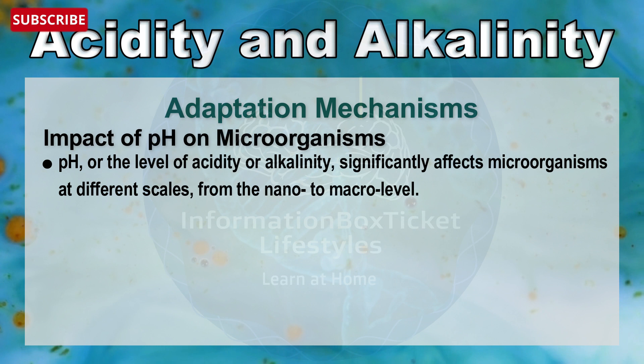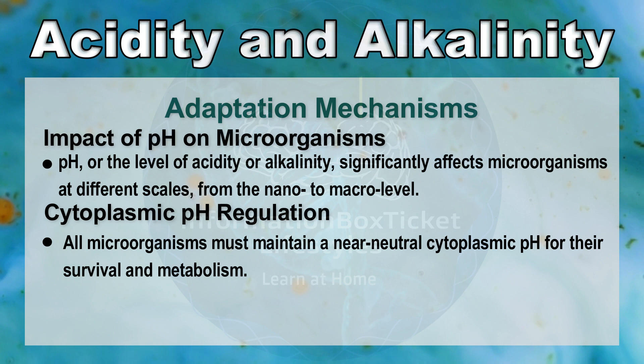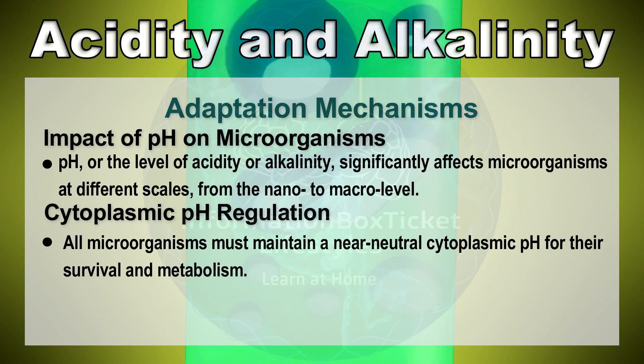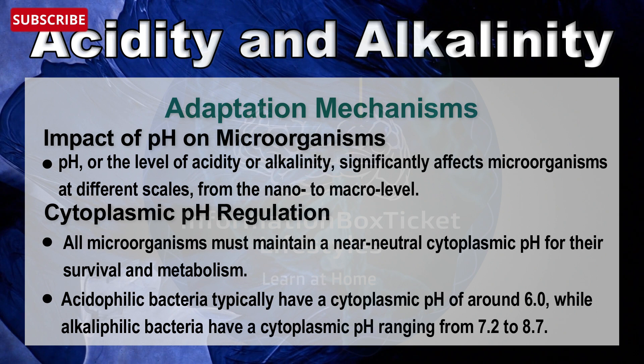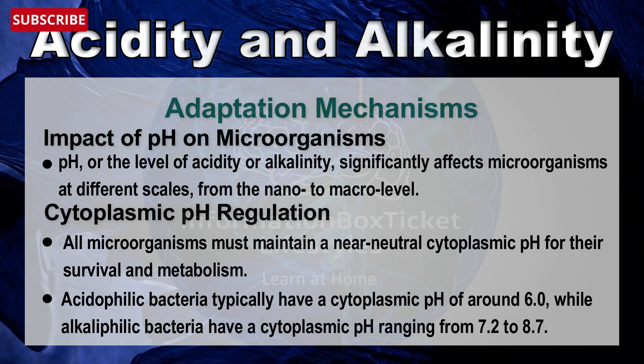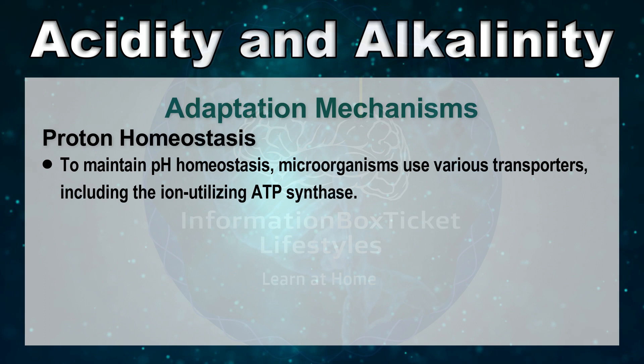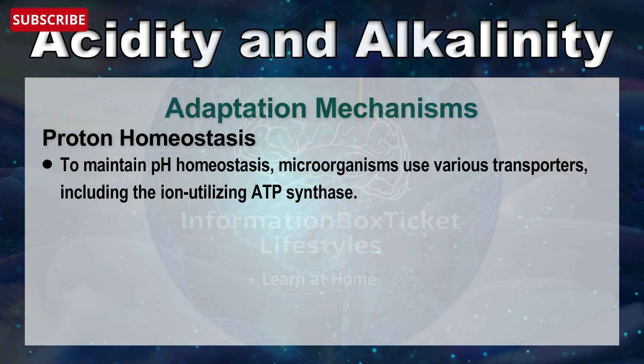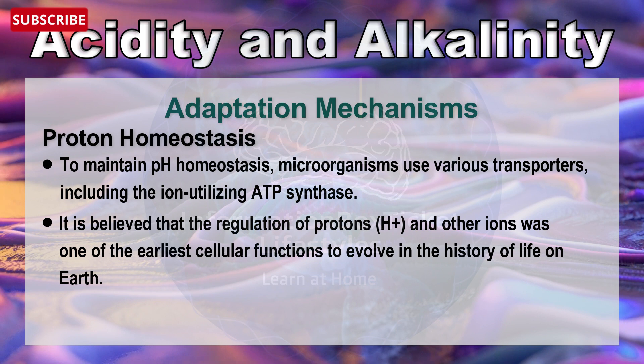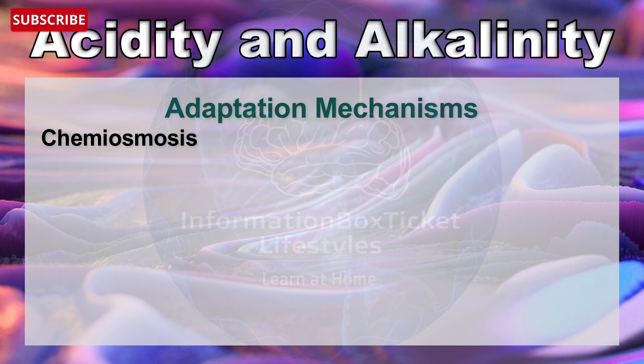All microorganisms must maintain a near-neutral cytoplasmic pH for their survival and metabolism. Acidophilic bacteria typically have a cytoplasmic pH of around 6.0, while alkaliphilic bacteria have a cytoplasmic pH ranging from 7.2 to 8.7. To maintain pH homeostasis, microorganisms use various transporters including ion-utilizing ATP synthase. It is believed that regulation of protons and other ions was one of the earliest cellular functions to evolve in the history of life on Earth.